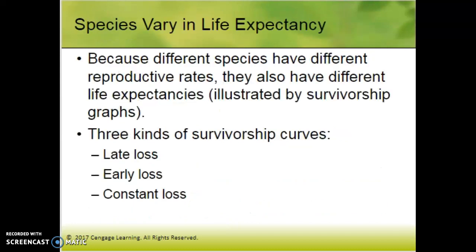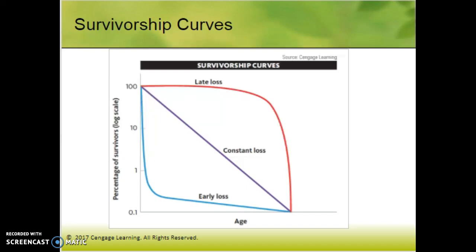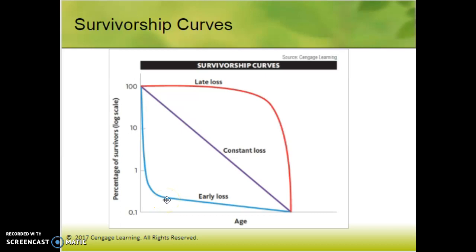Piggybacking on that idea: because we have different reproductive rates, we also have different survivorship curves — different life expectancy patterns. The picture makes more sense here. Early loss is like r-selected species: lots of babies are born, a lot die off early, but if you make it to year two, three, or four, you're probably going to survive a long time.